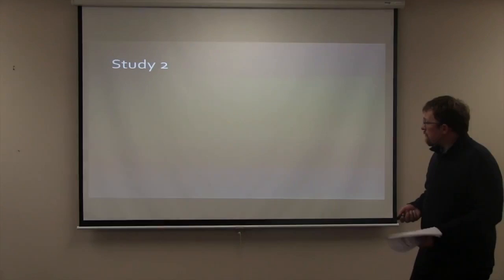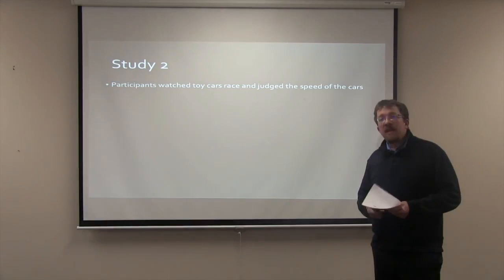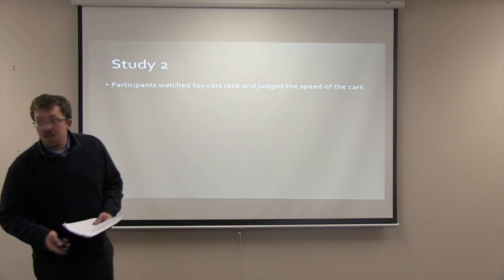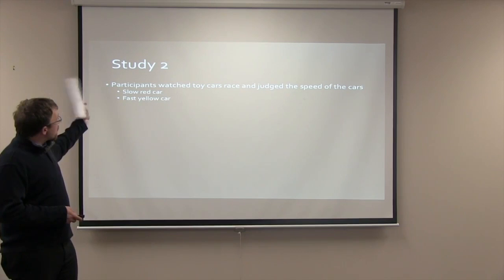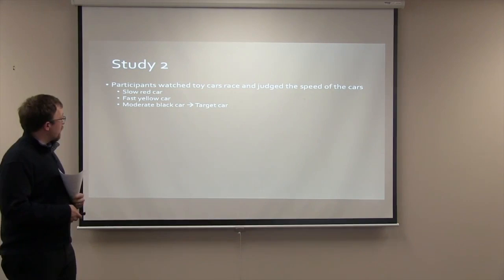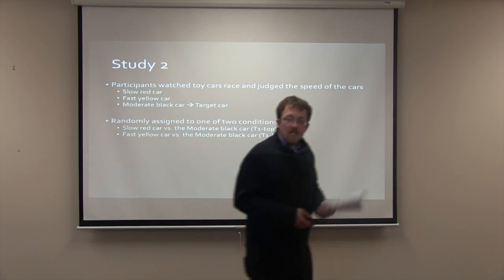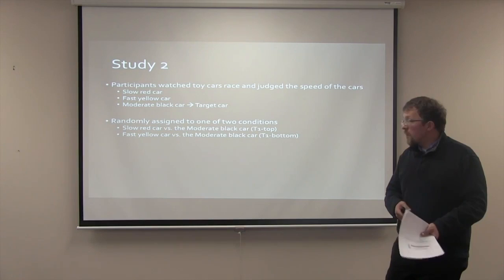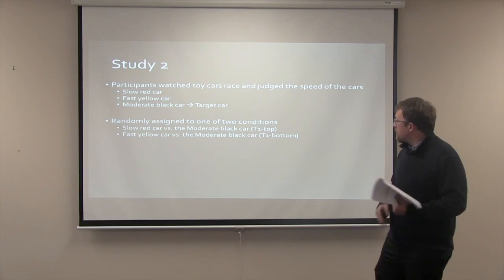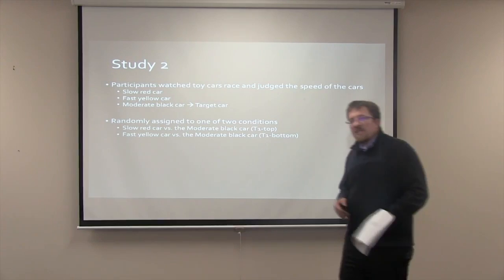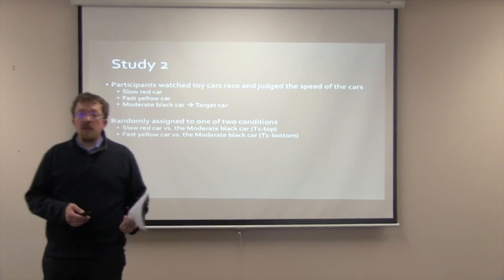In the second study, the researchers had participants watch toy cars race along a track at two different times and then make evaluations about which car they thought was the fastest. The researchers had three different toy cars: a slower red car, a faster yellow car, and a moderate speed black car, which they called the target car. Similar to the first study, participants were randomly assigned to one of two conditions, in which they either saw the moderate car race the slower car in the T1 top condition, or saw the moderate car race the fast car in the T1 bottom condition. The reason for doing this was to make the moderate car look relatively fast when racing the slow car, or relatively slow when racing the fast car.